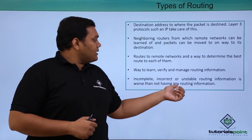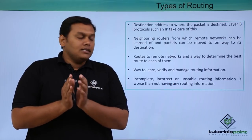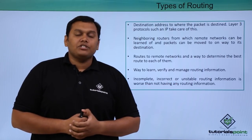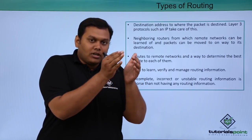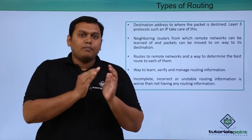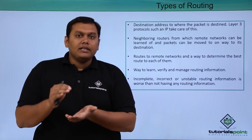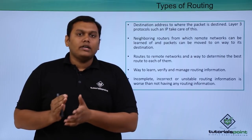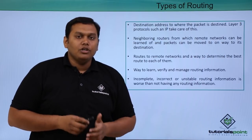Incomplete, incorrect, or unstable routing information is worse than having no routing information at all. You should have the correct information about to which destination a packet has to be moved. Incorrect or incomplete details will lead to wrong routing as well as performance issues in your network.